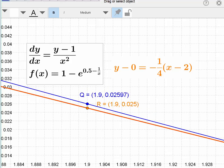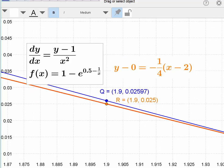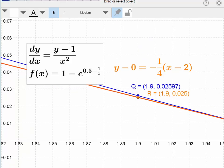So looking at this numerically, we see that 0.025, which is the one-fortieth that we computed, and we see that the actual value of f of 1.9 is 0.02597. Again, really close when you're dealing with a point that is close to the point of tangency.